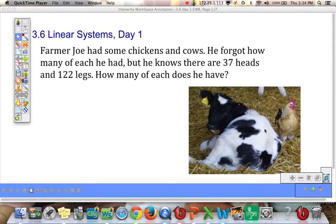Farmer Joe had some chickens and cows. He forgot how many of each he had, but he knows there are 37 heads and 122 legs. How many of each does he have?